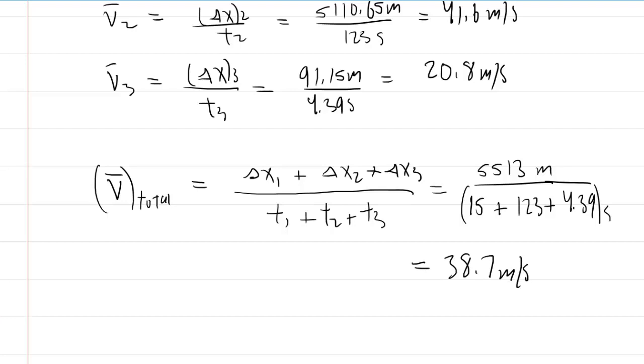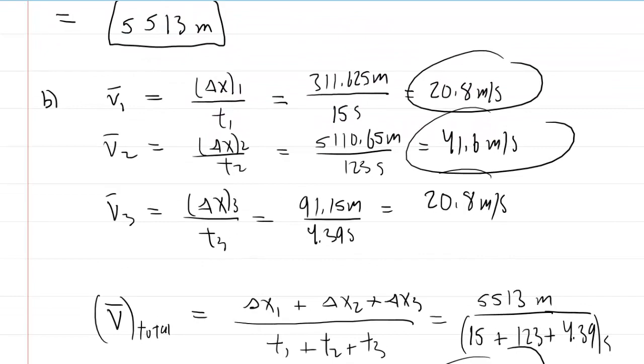So 38.7 meters per second is the average velocity for the entire trip, and we have the individual average velocities for each segment above.